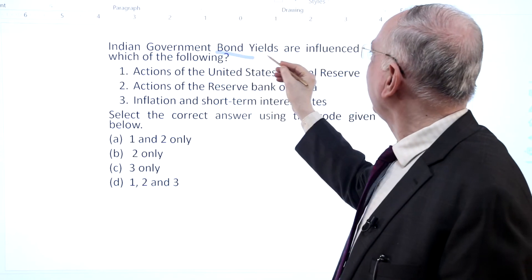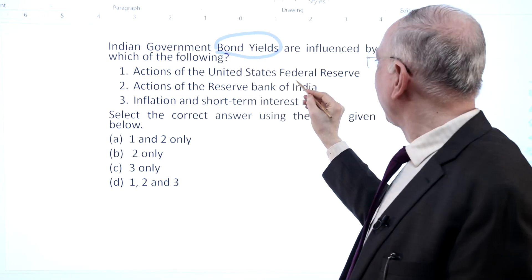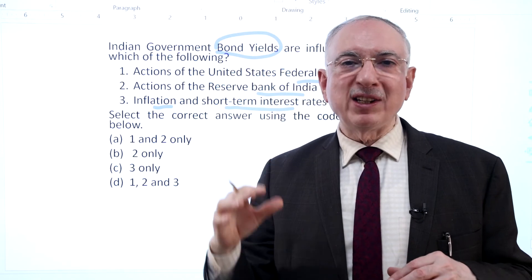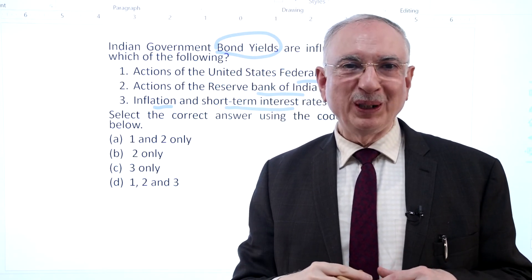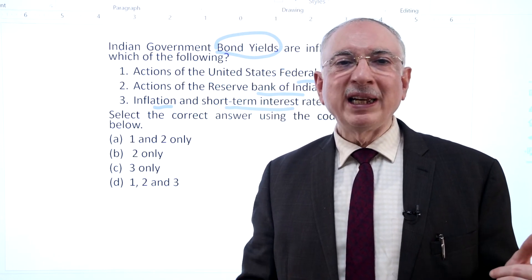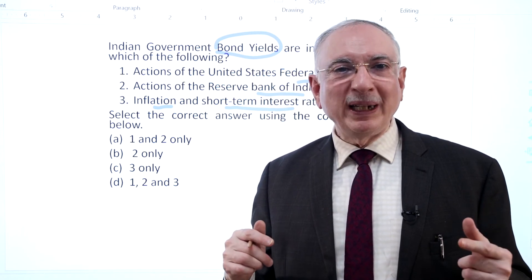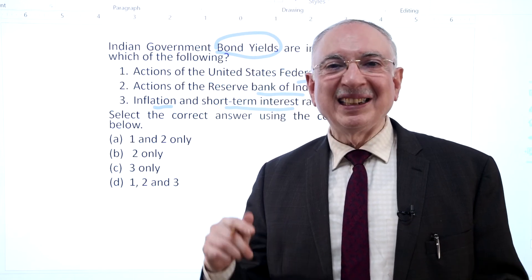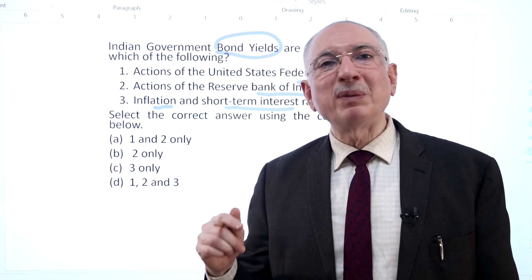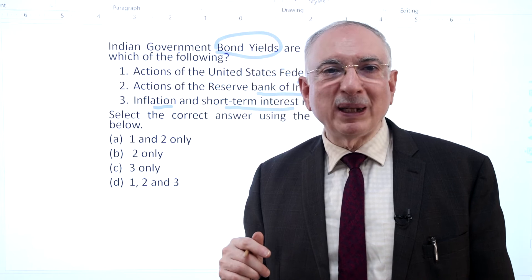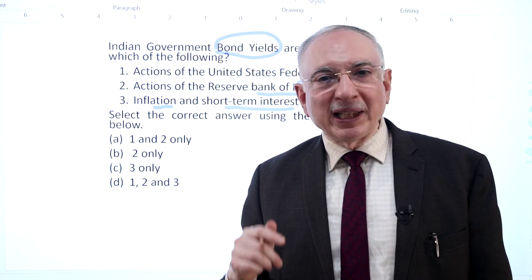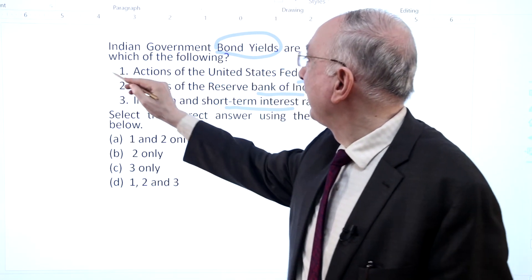The key points are bond yields, the Federal Reserve, RBI, inflation, and short-term interest rates. Bond yield is the return an investor gets on a bond; it depends on the price of the bond, which is impacted by its demand. Major factors affecting yield include the monetary policy of the RBI — especially the interest rate — the fiscal position of the government and its borrowing program, global markets, the economy, and inflation. Actions of the US Federal Reserve can impact investment flowing into India, affecting foreign players' investment in government securities, which changes demand and thereby impacts yield. Hence statement 1 is correct.